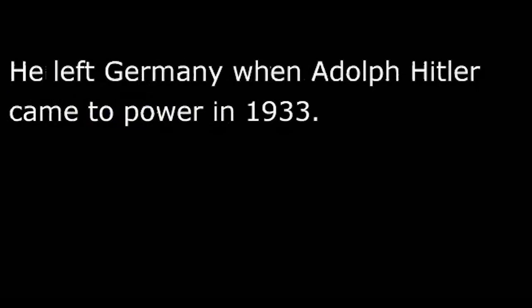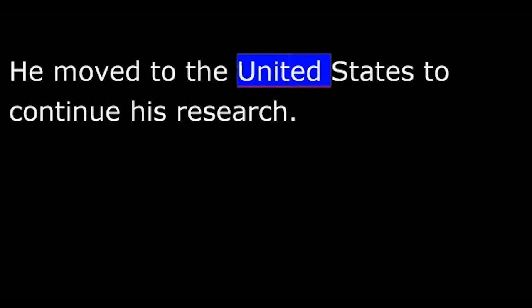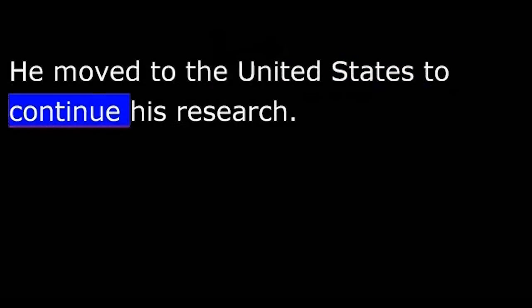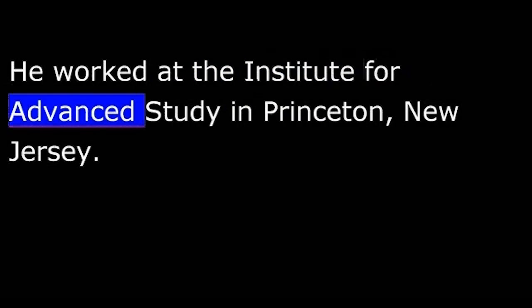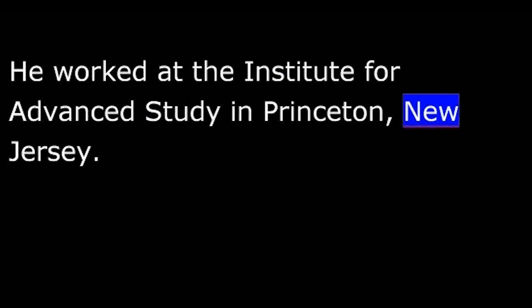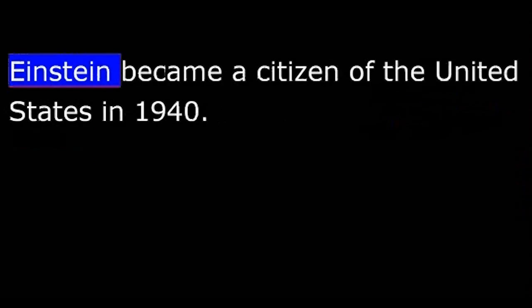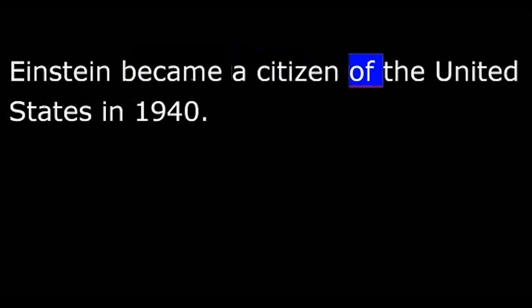Albert Einstein taught in Switzerland and Germany. He left Germany when Adolf Hitler came to power in 1933. He moved to the United States to continue his research. He worked at the Institute for Advanced Study in Princeton, New Jersey. Einstein became a citizen of the United States in 1940.